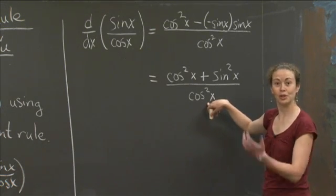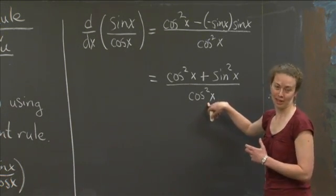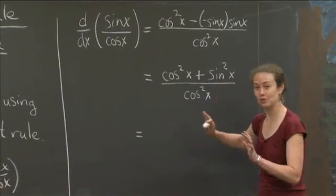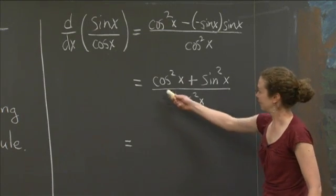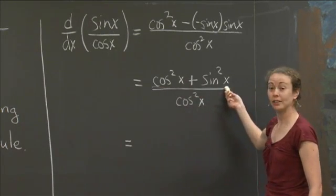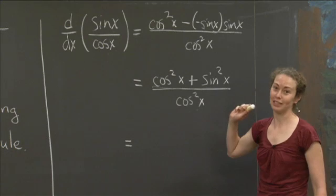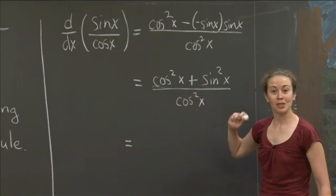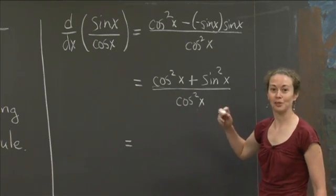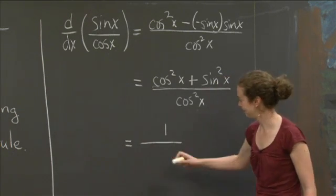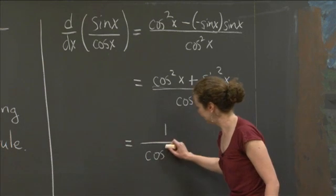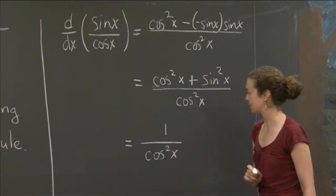I'm going to go a different way to show you what this actually also equals. At this point, I want to stress there are two ways you can get to the same place. I'm going to use the fact that the numerator is a very nice trigonometric identity that we know. We know cosine squared x plus sine squared x always equals 1. So this is quite lovely. The numerator simplifies to 1, and the denominator stays cosine squared x.